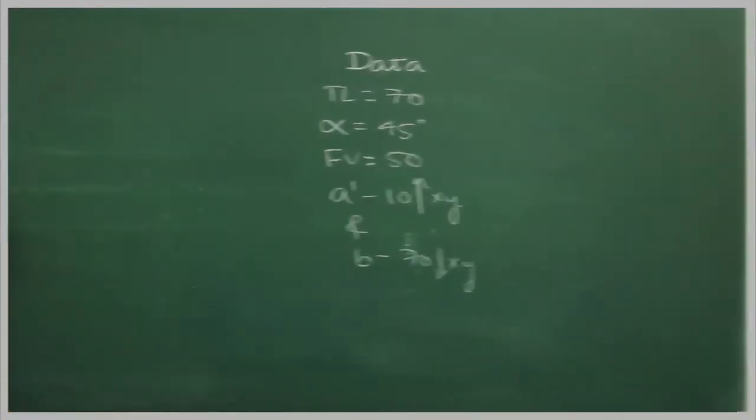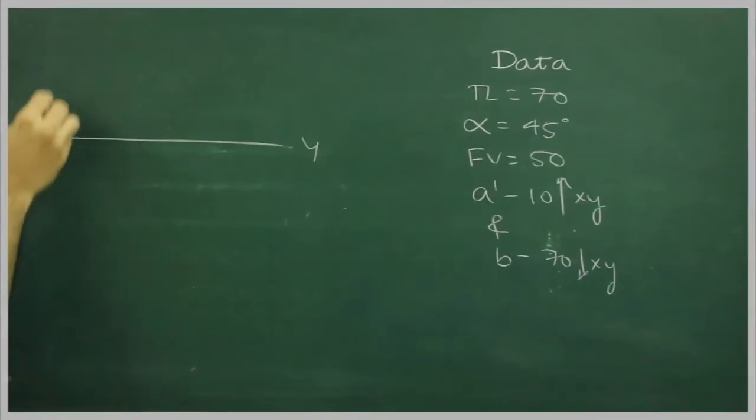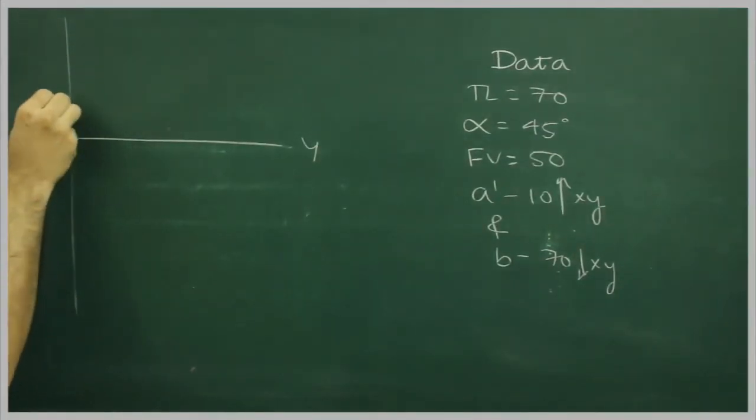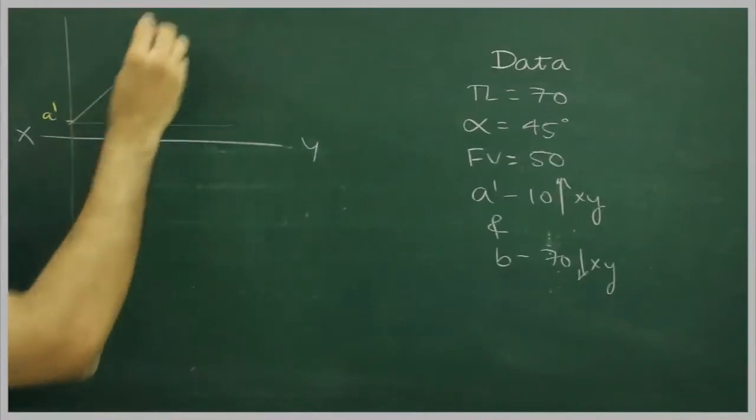Now we will draw xy and first we will mark point A dash. We have given angle alpha, so we can mark angle 45 degree.